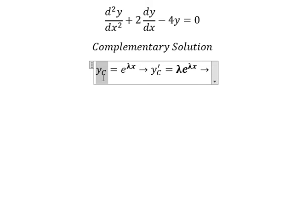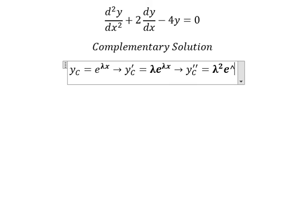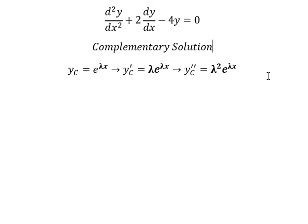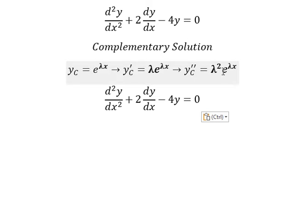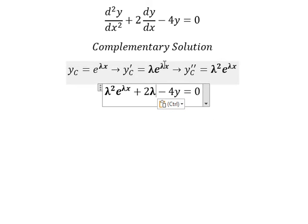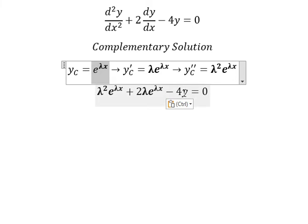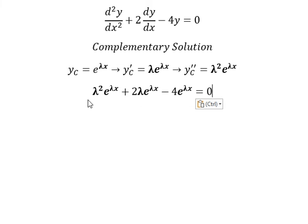Now we take the second derivative, giving us lambda squared e to the power of lambda s. Substituting these into the equation and factoring out e to the power of lambda s, we can do factorization.